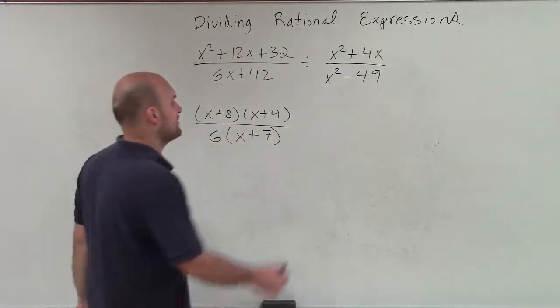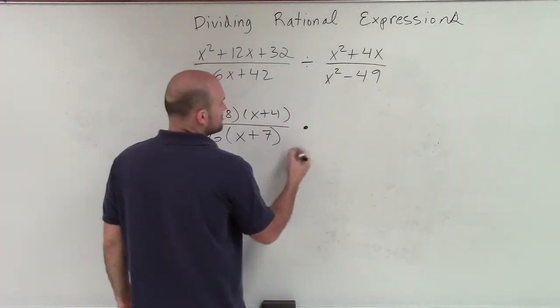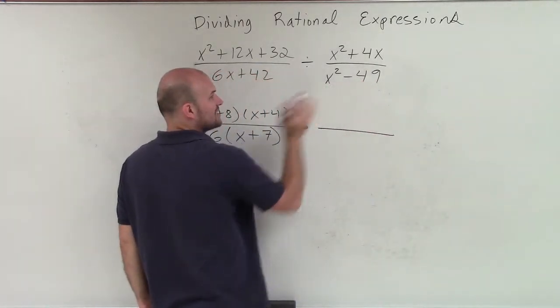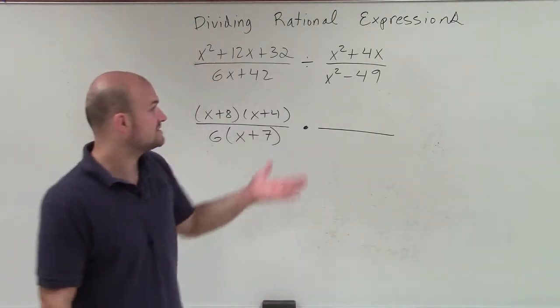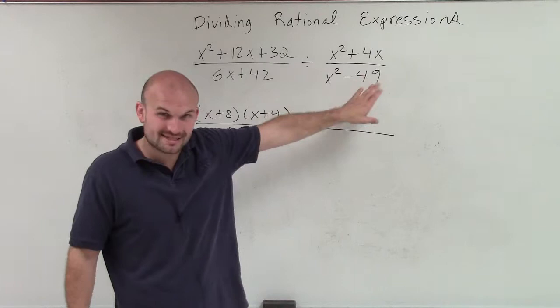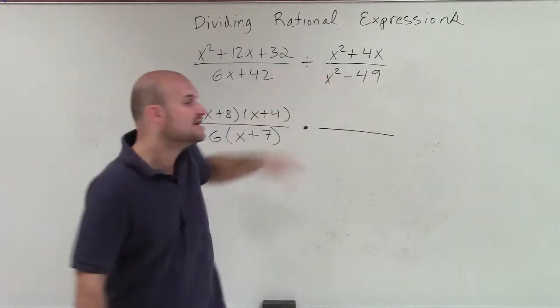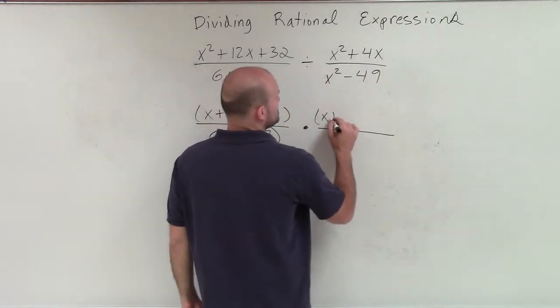And again, we want to simplify them. So I change this to a multiplication problem. And then now I'm going to factor x squared minus 49. And when we see a binomial with the difference, and we see the first term is squared, we want to determine is the second term a squared number, which 49 is. So I know I can rewrite this as a difference of two squares.